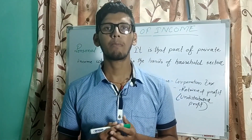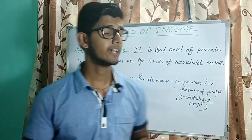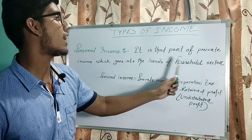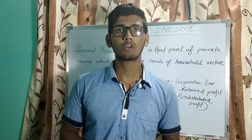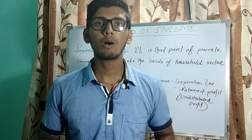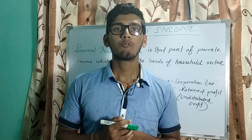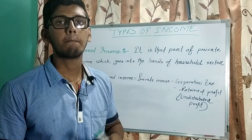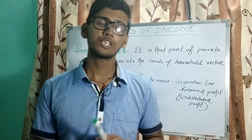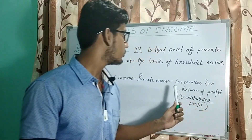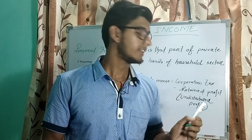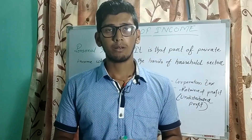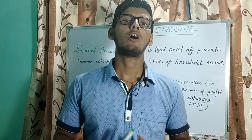Personal income is basically a part of private income. It is that part of private income which goes into the hands of the household sector — that means income which goes to normal people in the form of salaries, wages, etc. To calculate this, we apply the formula: Personal Income equals Private Income minus corporation tax. Corporation tax is one kind of tax which the business sector pays to the government. We also have to deduct retained profit.